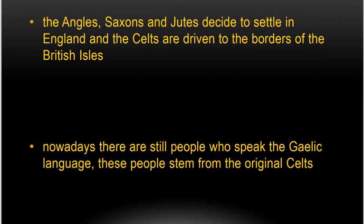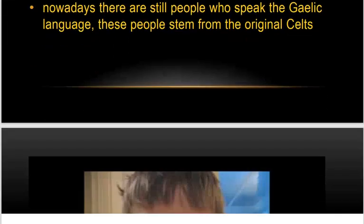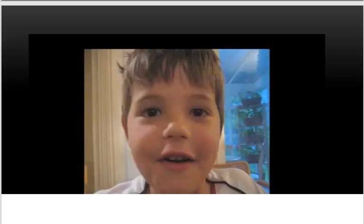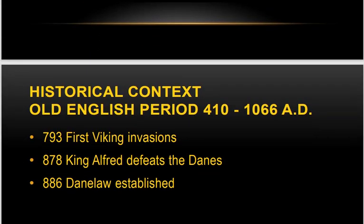The Angles, Saxons, and Jutes decided to settle in England, and the Celts were driven to the borders of the British islands. Nowadays there are still people who speak the Gaelic language — these people stem from the original Celts, who were the native British — while the rest of the British people are of foreign or immigrant origin.